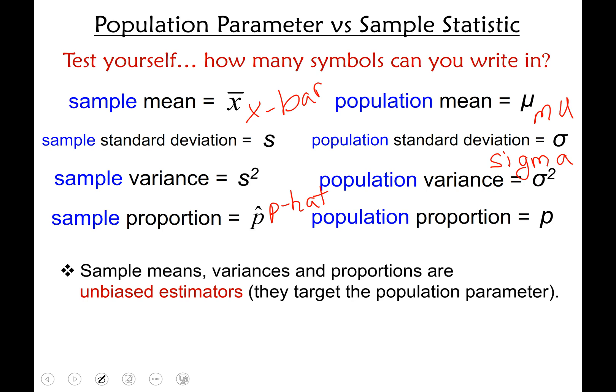Sample means, sample variances, and sample proportions are unbiased estimators. What that means is we can calculate a statistic based on a sample mean, sample variance, sample proportion, and we could then use that mean or that standard deviation, whatever that statistic is that we calculated, and use it to make a projection about the population parameter or a prediction or a target if you will.